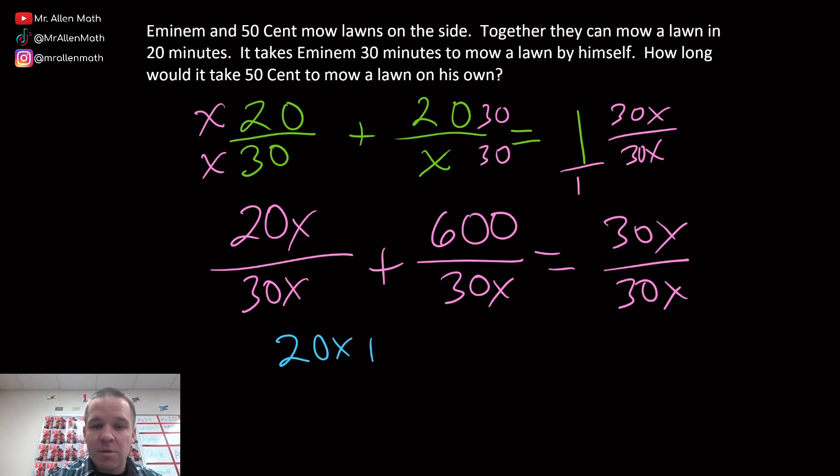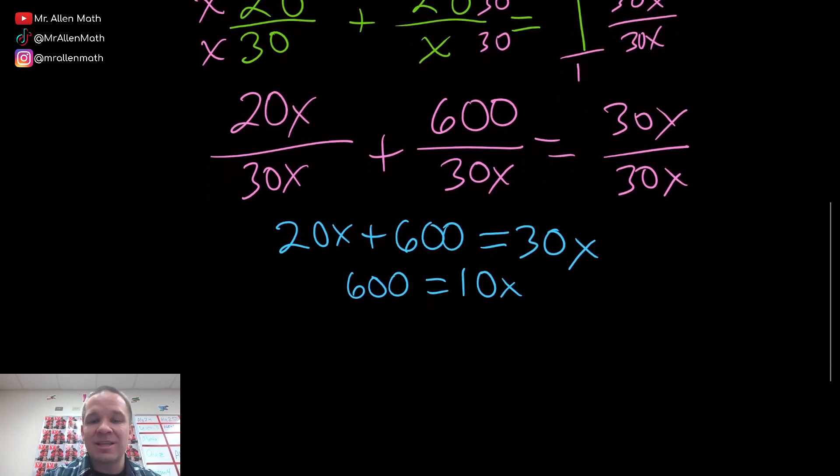I've got 20X plus 600 equals 30X. Now I'm going to subtract that 20X over, so I'm going to have 600 equals 10X. And then lastly, I'll go ahead and divide by 10. No calc needed on this bad boy right here. We got X equals 60.